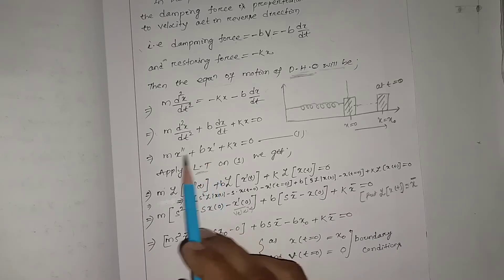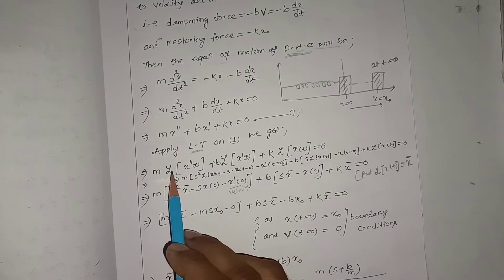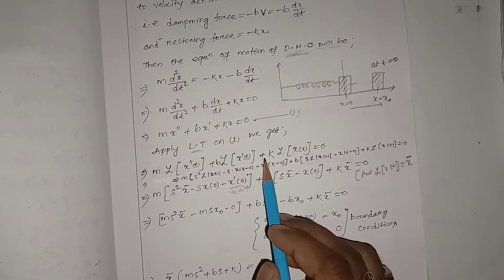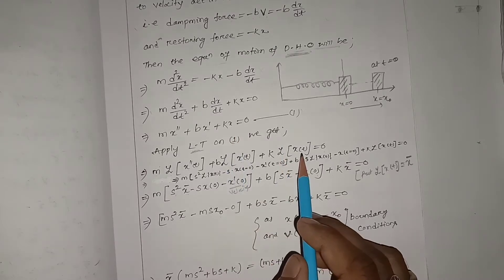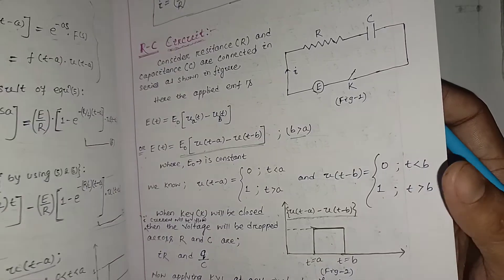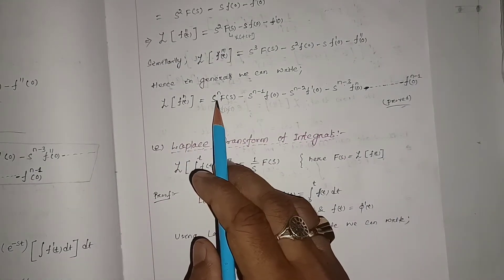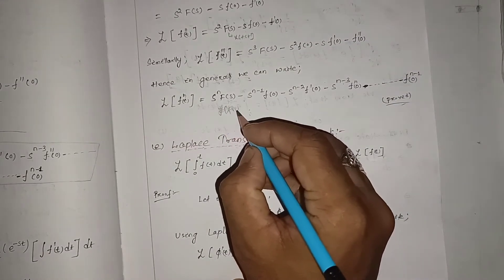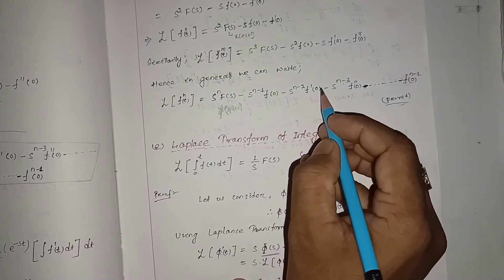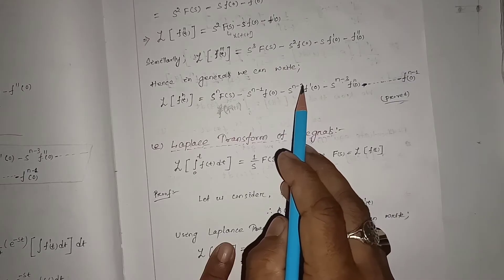Now we apply Laplace transform to equation number one. Applying Laplace transform: m·L{x''} + b·L{x'} + k·L{x} = 0. The Laplace transform of the nth derivative is: s^n·F(s) - s^(n-1)·f(0) - s^(n-2)·f'(0) - and so on. For n=2, the second derivative gives terms with s², s¹, and s⁰.